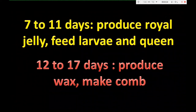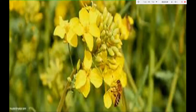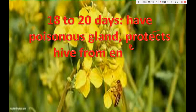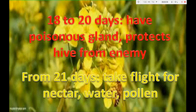From twelve to seventeen days, the worker produces wax. From eighteen to twenty days, it has a poisonous gland, protects the hive from enemies, and collects wax from the surroundings. Scattered wax is collected by the worker bee in this stage. From twenty-one days onward, it takes flight to collect nectar, water, and pollen.